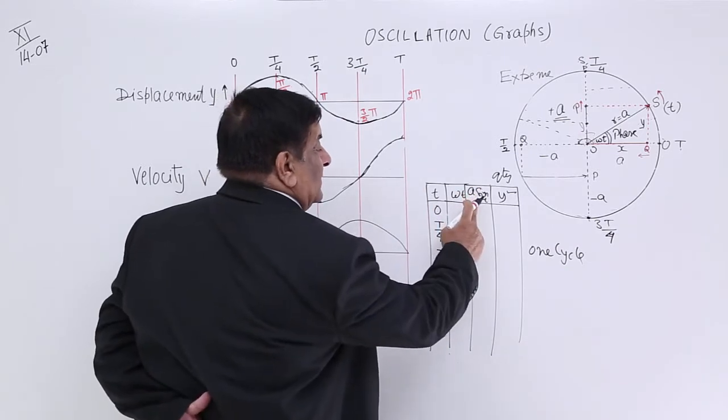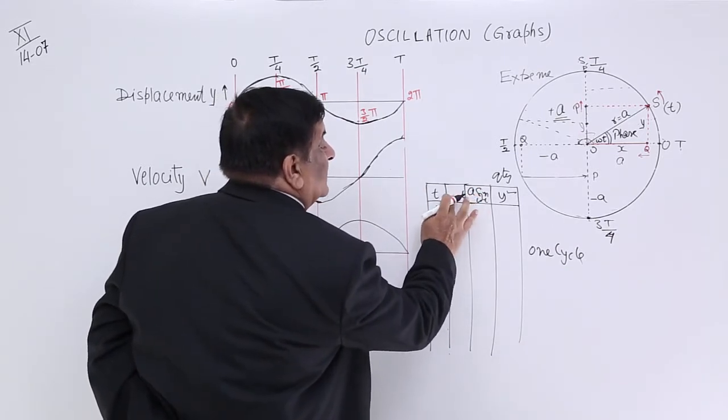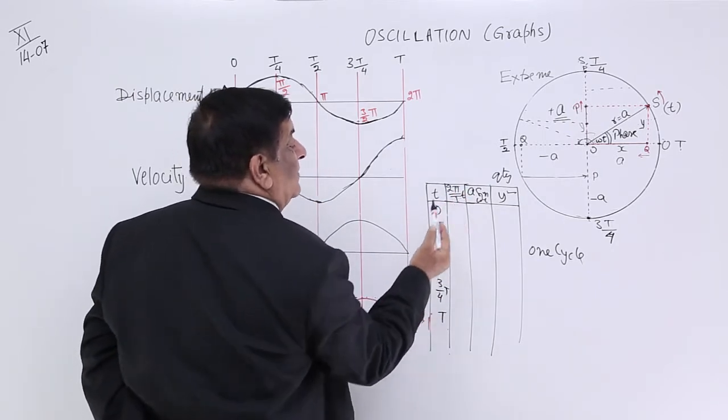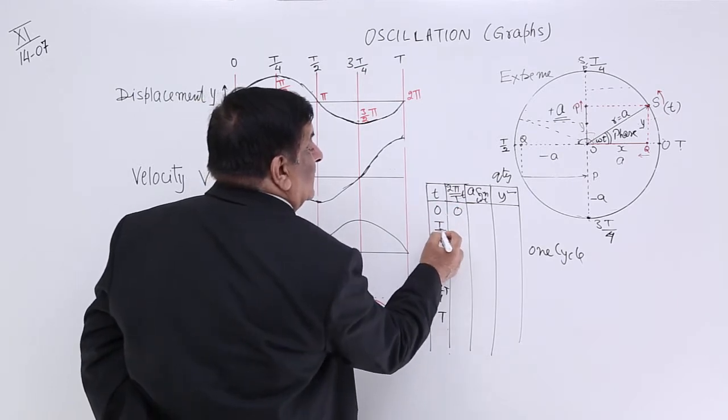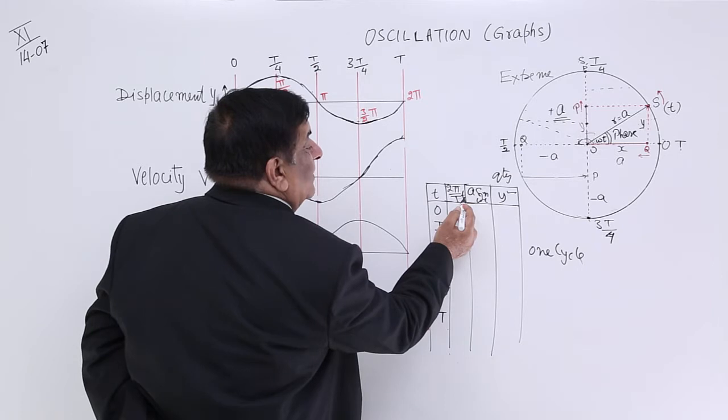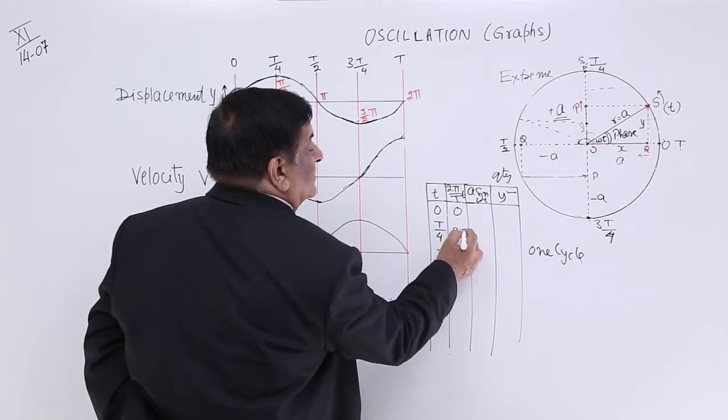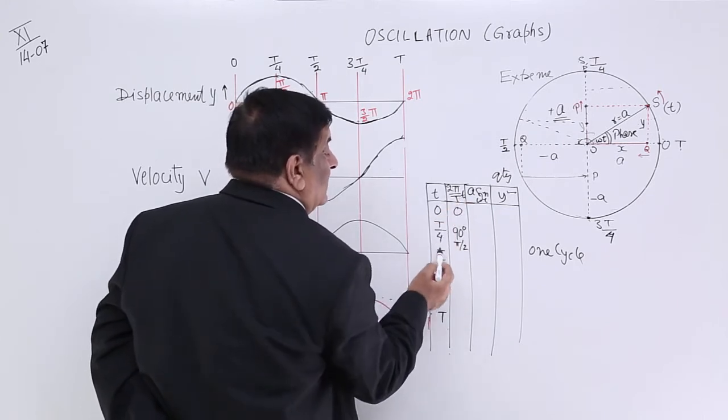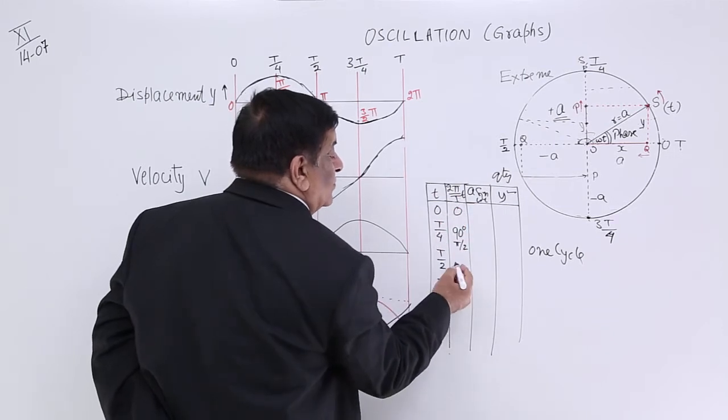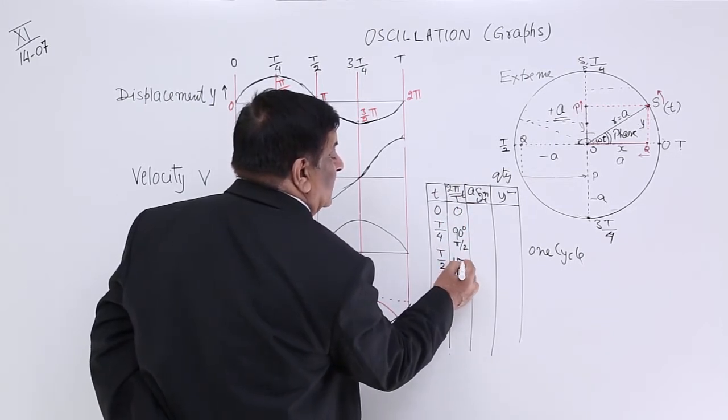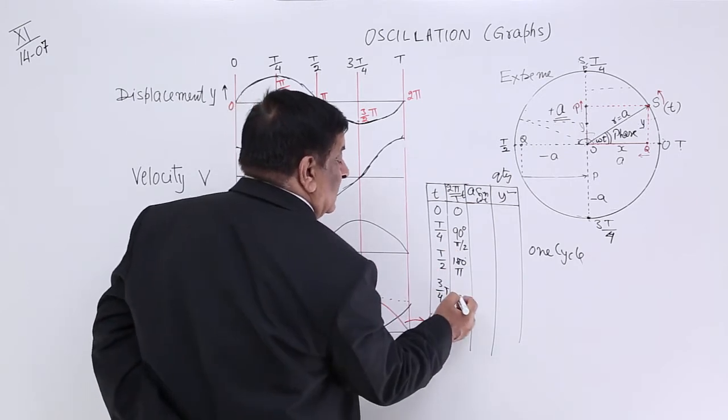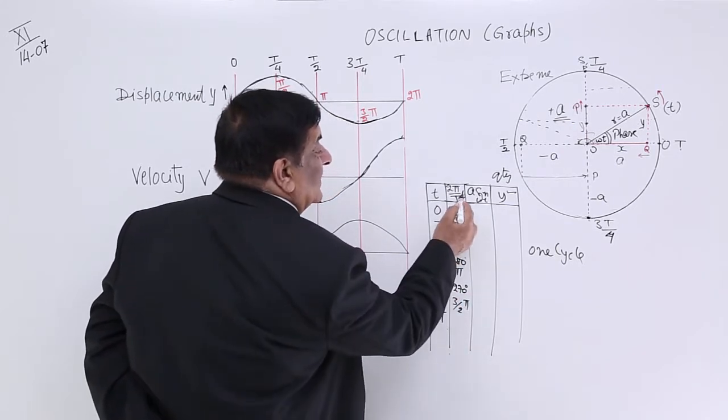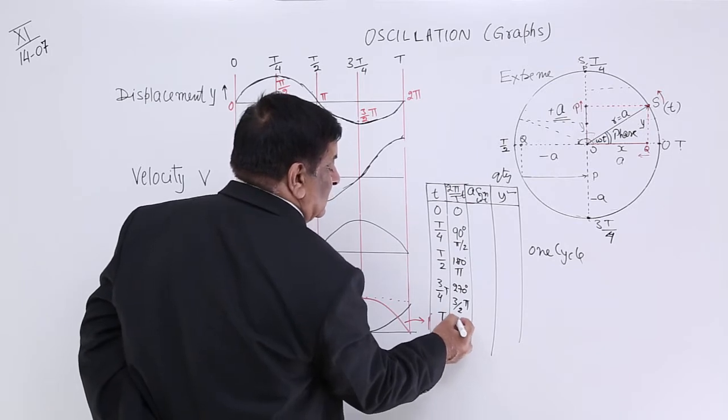In this omega t, omega is 2 pi upon t. So 2 pi upon t multiplied by 0. Then multiplied by t by 4, so this will be pi by 2, which is 90 degrees. Then t by 2 will be pi, which is 180 degrees. 3 by 4 will be 270 degrees, which is 3 upon 2 pi. And when we put t here, it is 2 pi, which is 360 degrees.